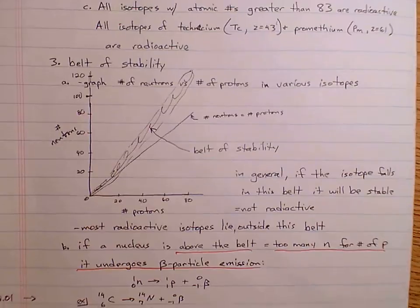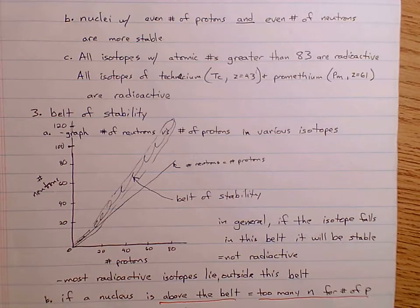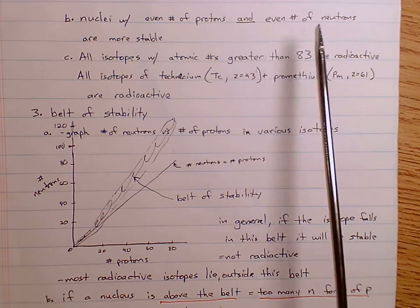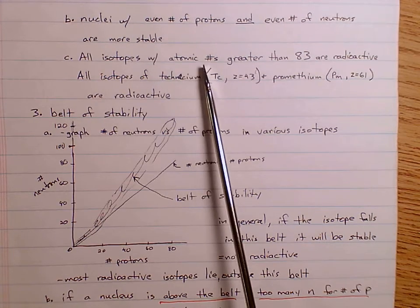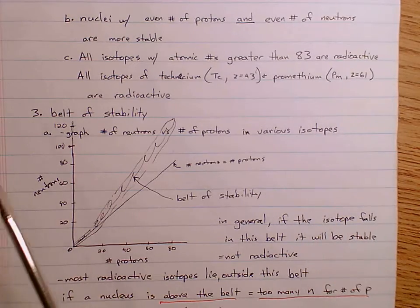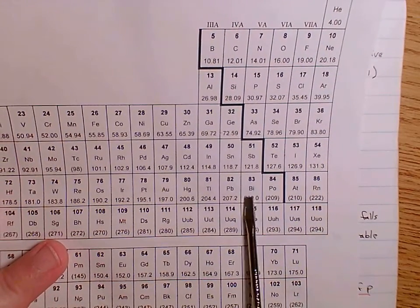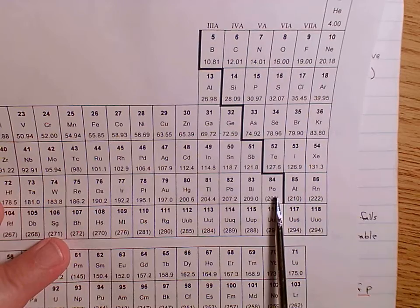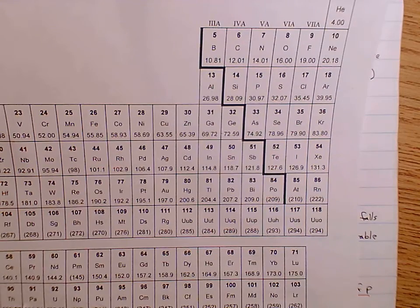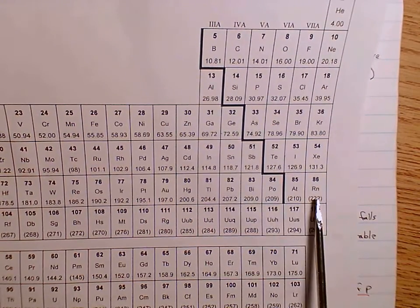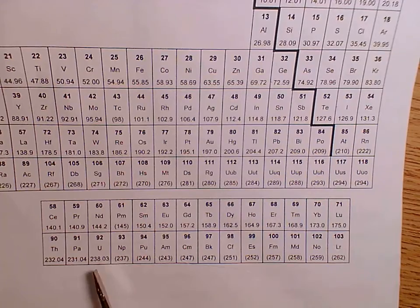Other tricks to look for: nuclei with an even number of protons and an even number of neutrons tend to be more stable. Also, isotopes with atomic numbers greater than 83 are all radioactive. Element 83 is bismuth, which means starting with polonium, every element with an atomic number larger than that has every isotope unstable — every isotope of polonium is radioactive, and every isotope of uranium is radioactive.